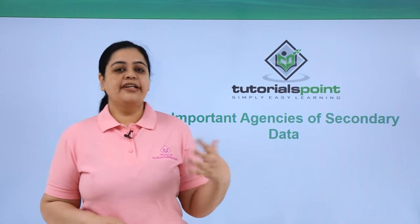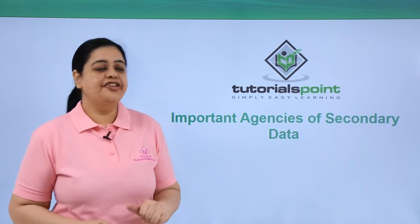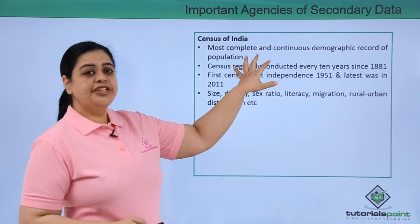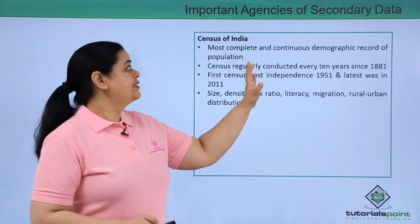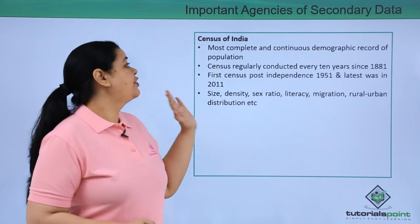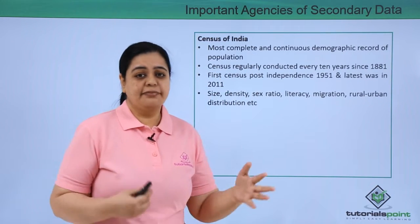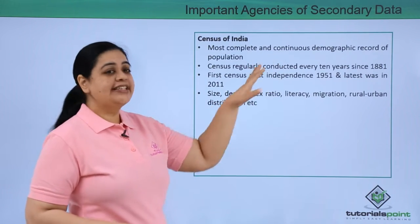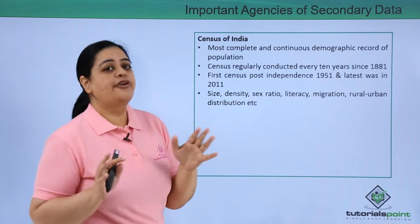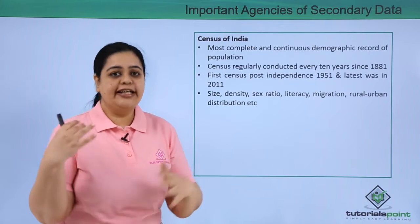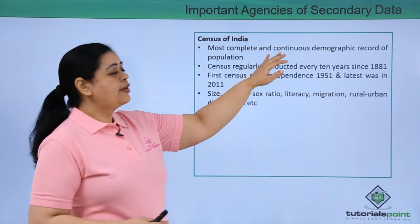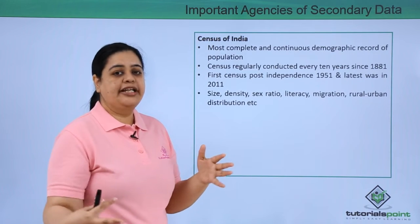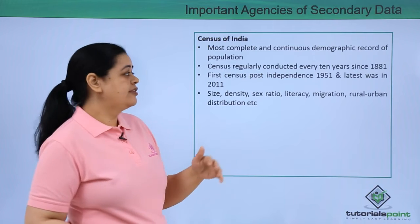Now let us see what are the important agencies of secondary data. When talking about secondary data, the most important agency is the Census of India. The Census of India is the most complete and continuous demographic record of the population, conducted every 10 years. You keep getting information about how the demographics of India have changed over the years.